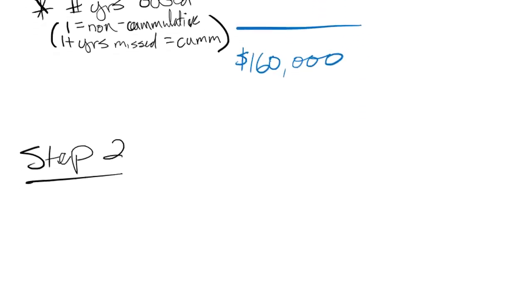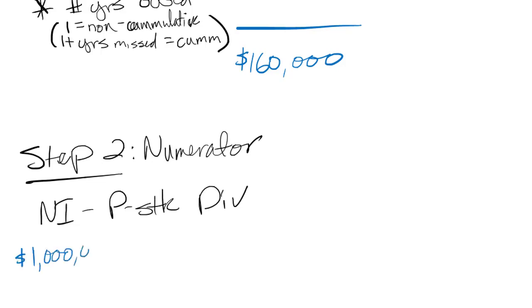Now that I know that number, step two, I'm going to calculate my earnings per share numerator. And that's net income minus the preferred stock dividend. In this case, net income was given to us. It was $1,000,000. Preferred stock dividend we just calculated right up here. So my numerator will end up being $840,000.